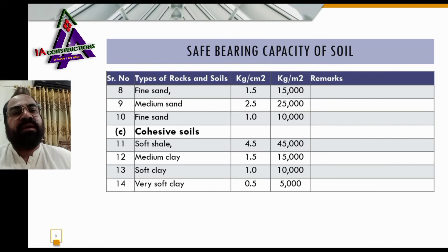Number eleven: soft shale — bearing capacity of soft shale is 4.5 kg per centimeter square and 45,000 kg per meter square.